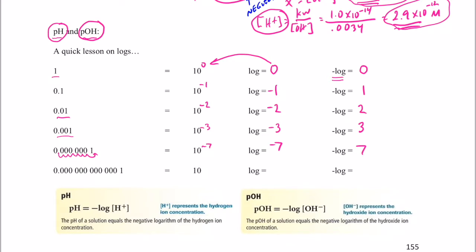And this one here, we're going to count over 13 places. So that equals 10 to the negative 13. The log of that number is negative 13, so the negative of that log is 13. Pretty simple, isn't it?